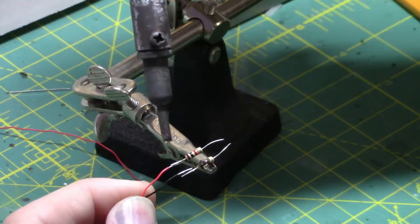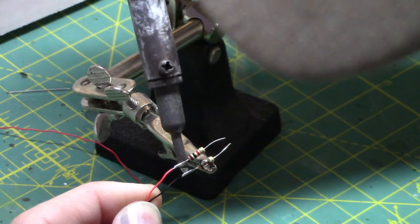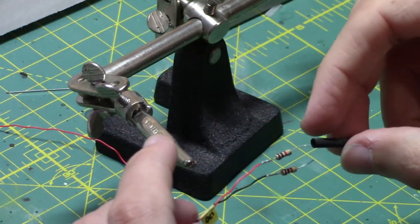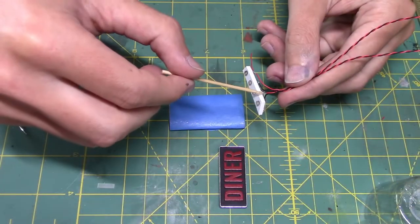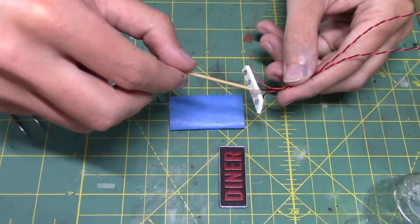I am using 3.3 volts to help keep the lights dim, along with using 1K resistors I had on hand. They are soldered to each lead on the cathode side.